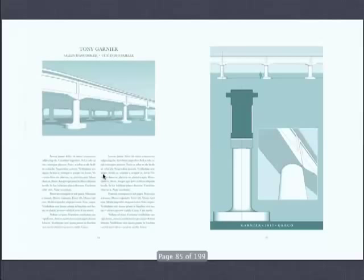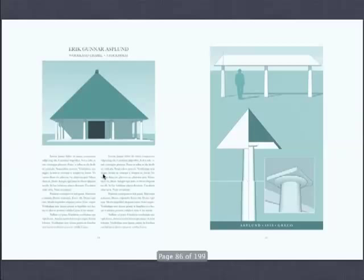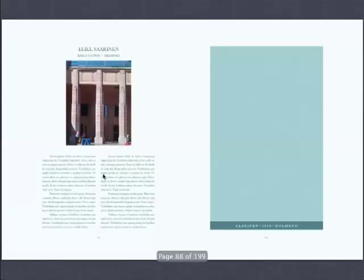Eric Gunnar Asplund — without entablature. Purcell and Elmslie again. Eliel Saarinen, an absolute master — this is an extraordinary order from the rail station.